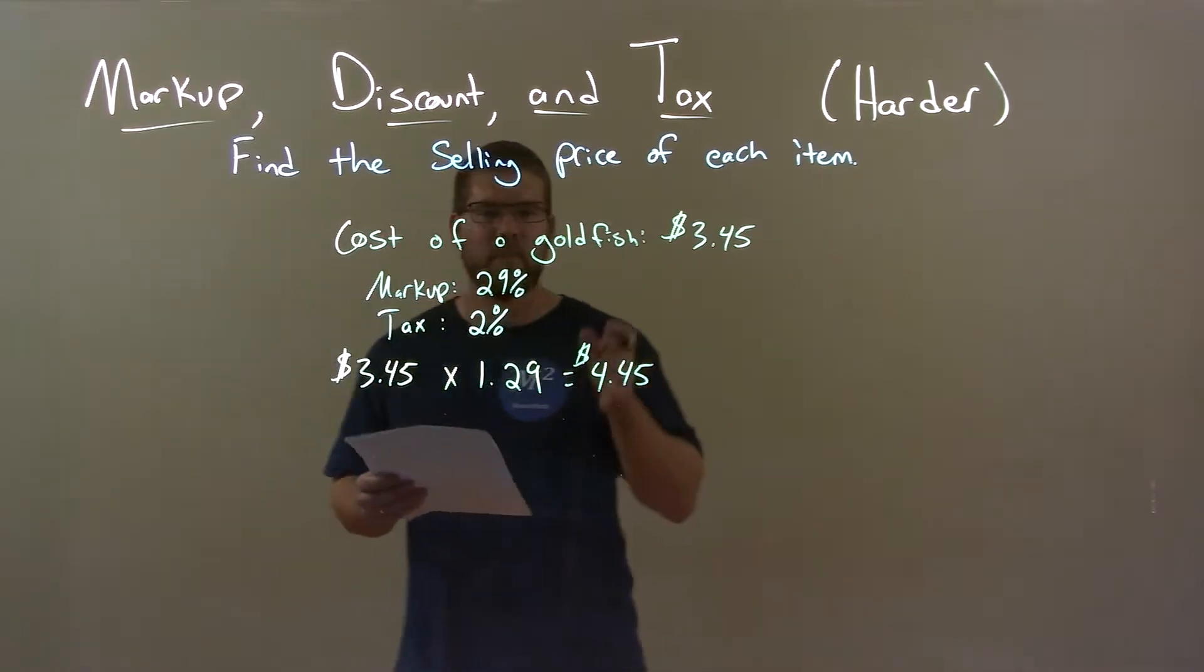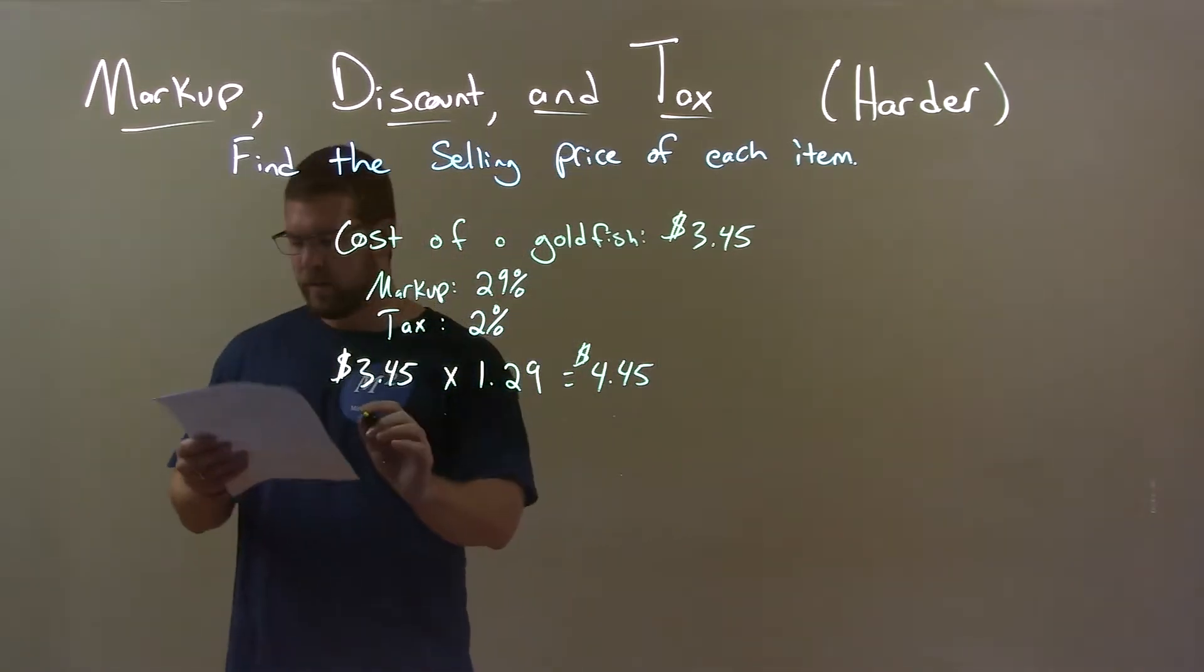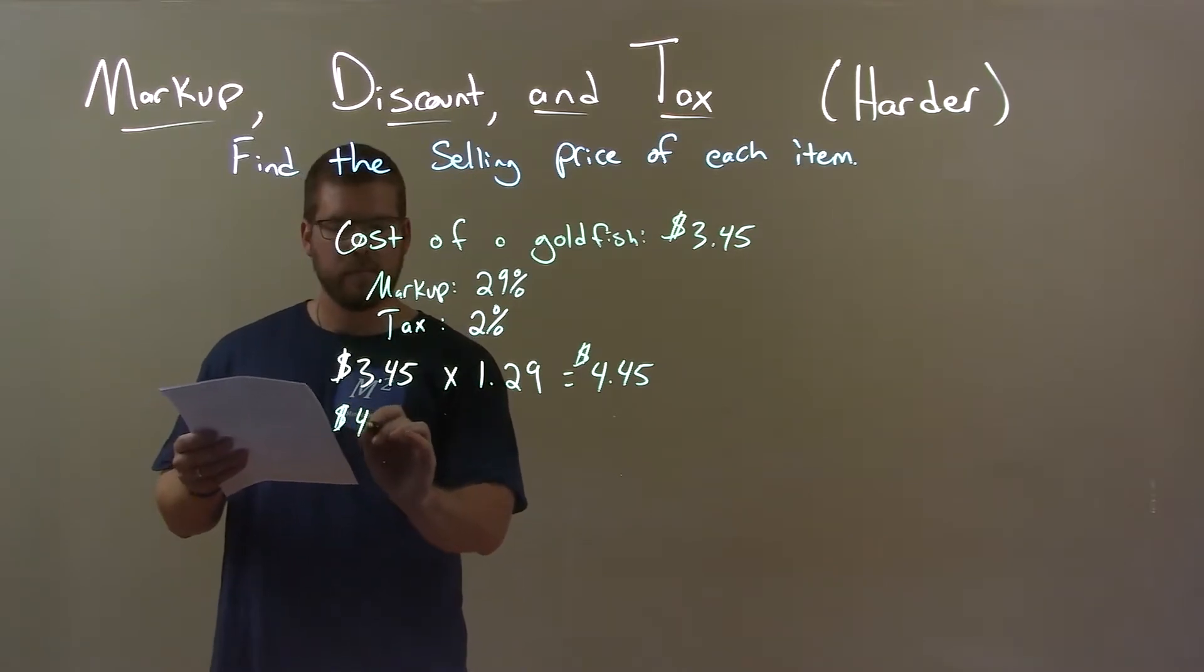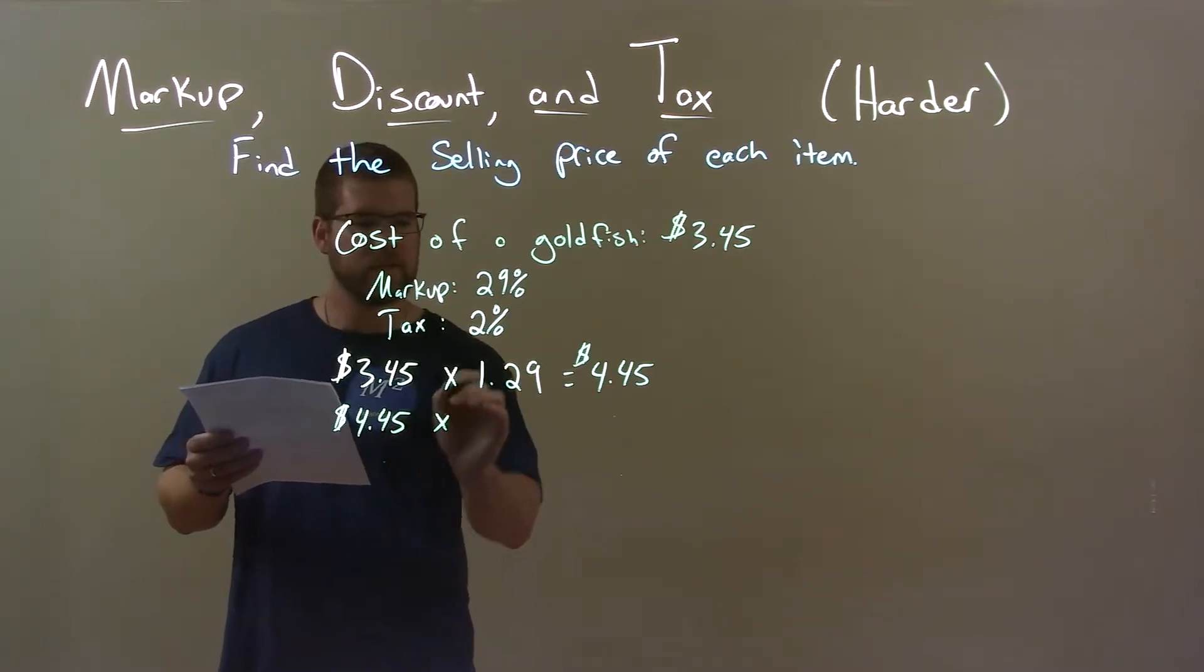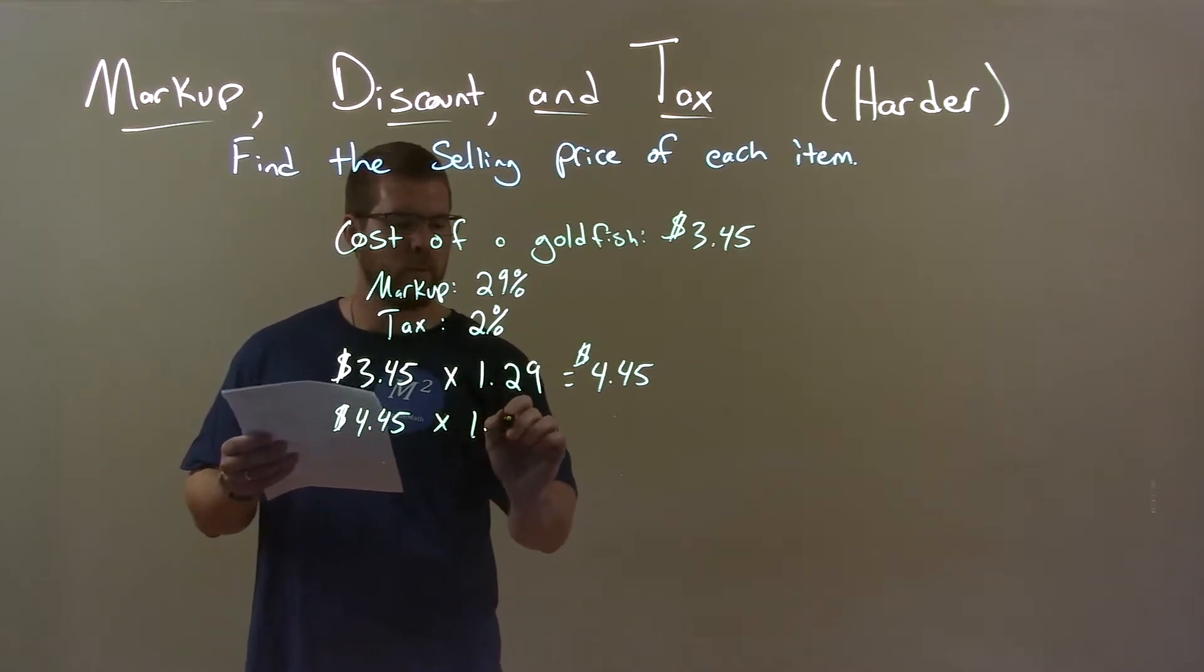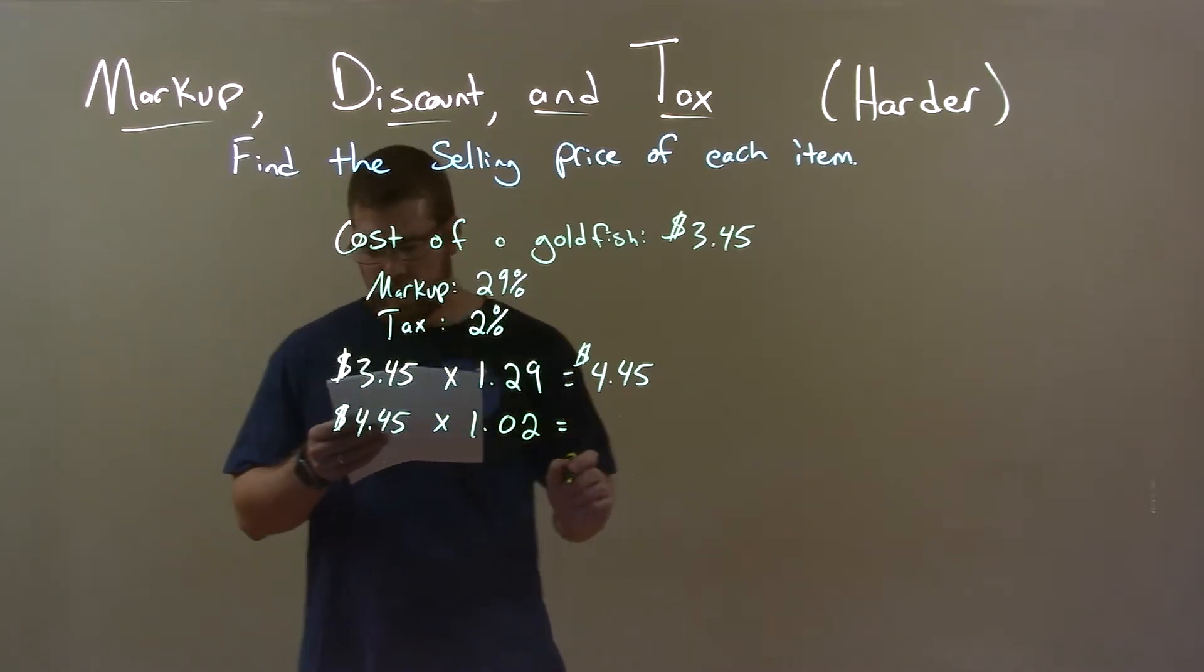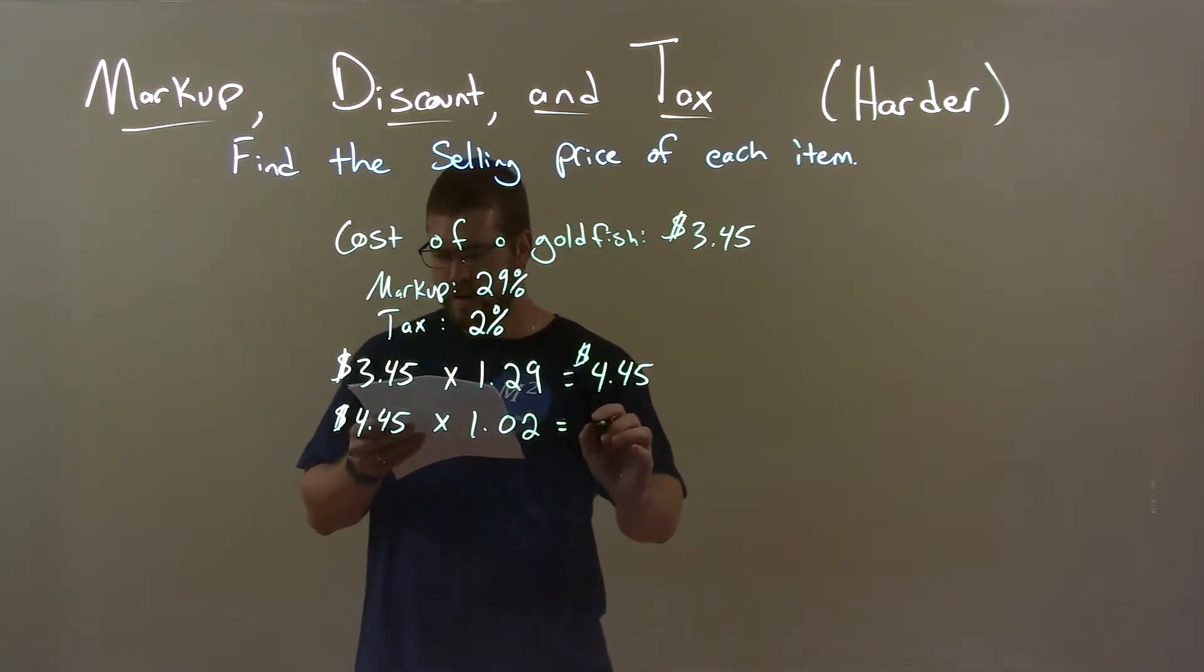But then we apply tax to that. So then we take that $4.45, and to apply a 2% tax, we multiply that by 1.02. This gives us a final answer of $4.54.